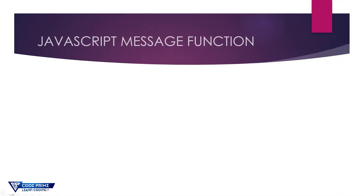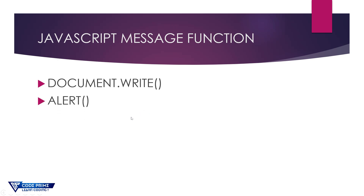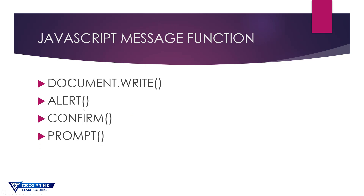Hello everyone, today you are going to learn the JavaScript message functions. We can display any type of message using document.write in your browser. We'll also cover how to show alert messages, confirm messages, prompt messages, and how to store values in variables. So we're going to use these four types of message functions: document.write, alert, confirm, and prompt.